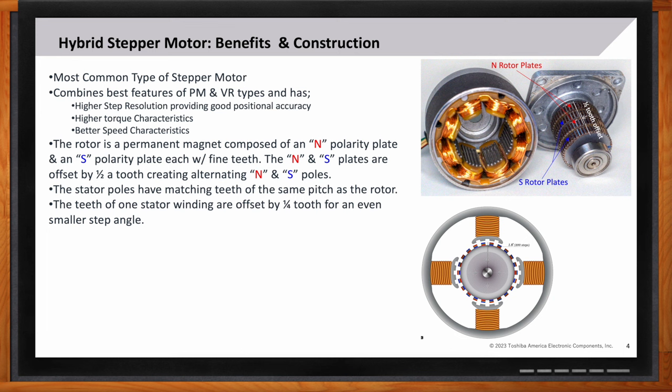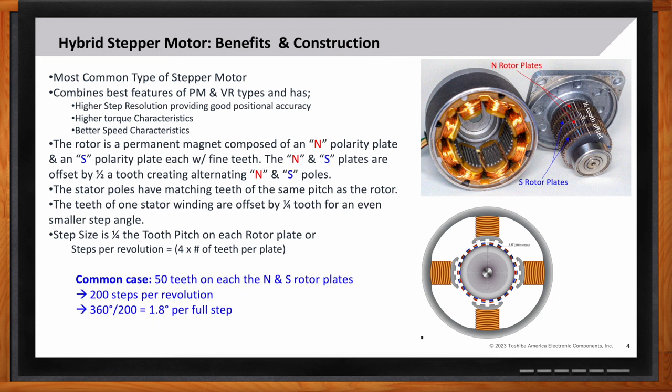This is what enables you to get an even finer step angle. So if you look at the graphic down on the lower right-hand side, you can see how with the upper pole, the rotor teeth are perfectly aligned with the stator teeth. However, on the left and right poles, they are offset in the middle of it. And then when the stator poles alternate between north and south, this is where you get the one-quarter step action in the motor. So the result of these teeth and the offsets gives us a one-quarter tooth pitch step. Another way of looking at that is saying that you have, per one revolution, you have four times the number of teeth per plate. A common case that we see is that these rotor plates have 50 teeth on each of the north and south plates. This results in 200 steps per physical revolution, or a 1.8-degree step.